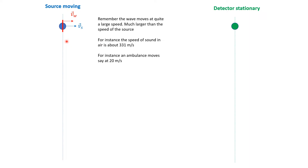Let's first remember the difference between the speed of a typical wave and a typical speed of the source. A sound wave moves in air at about 331 meters per second. A typical example is an ambulance moving with its siren on — the ambulance could be moving at about 20 meters per second. So the source that's moving is moving much slower than the speed of the wave itself.